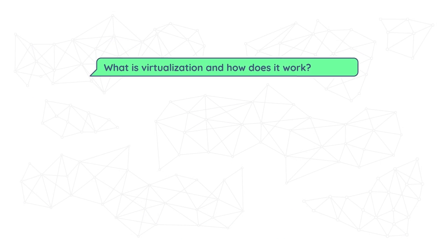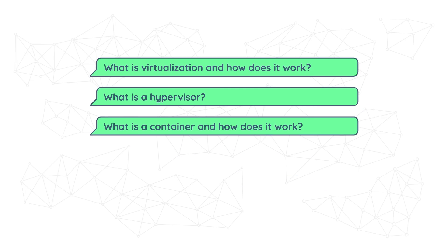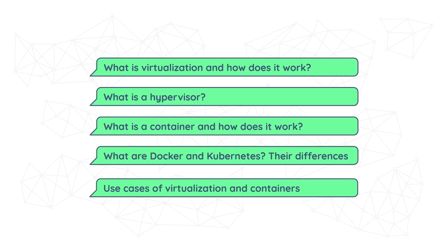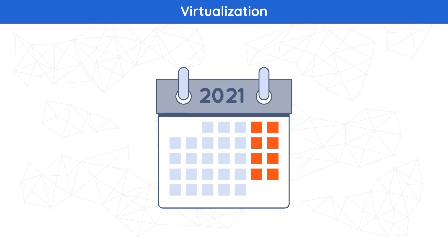Let's consider the main points of discussion for today. We'll start with determining what virtualization is and exactly how it works. Afterwards, we'll discuss containers, how they work, and what's all the fuss about them. We'll then move to discover what Docker and Kubernetes are and the differences between them. Finally, we'll discuss the most common use cases of virtualization and containers.